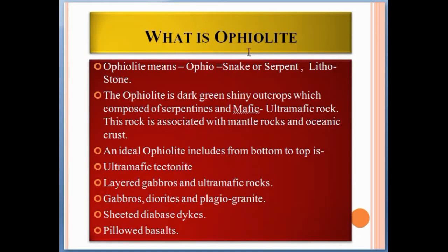What is Ophiolite? 'Ophio' refers to snake or serpent, and 'litho' means stones. So the stones or rocks that look like snakes or serpents are known as Ophiolite. Ophiolite is dark green shiny outcrops composed of serpentines and mafic to ultra-mafic rocks. These rocks are associated with mantle rocks and oceanic crust.